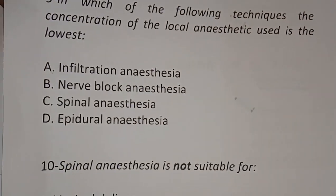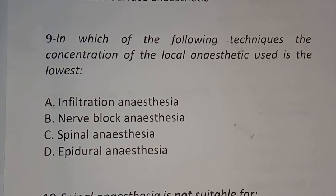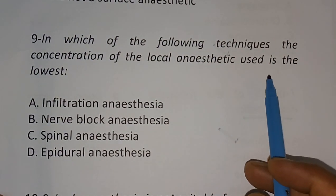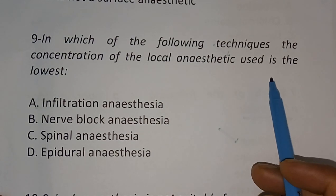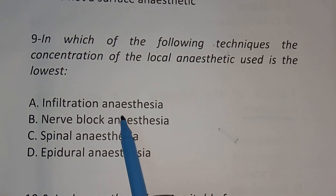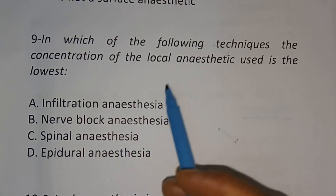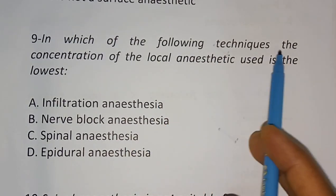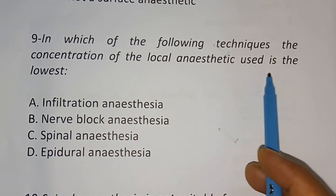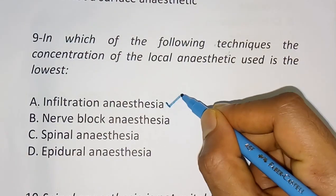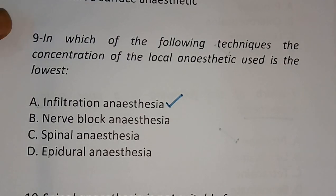Question 9: In which of the following techniques is the concentration of local anesthetic used the lowest? Options: (A) infiltration anesthesia, (B) nerve block anesthesia, (C) spinal anesthesia, (D) epidural anesthesia. The correct answer is infiltration anesthesia.